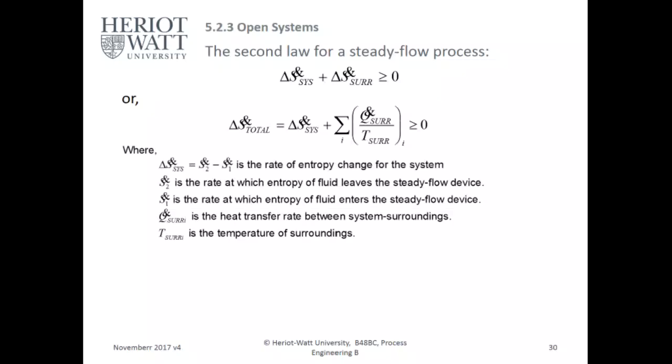Delta S of the system equals S2 minus S1, which is the rate of entropy change for the system. S2 is the rate of entropy of the fluid leaving the steady flow device, and S1 is the rate at which entropy of the fluid enters. Q of the surroundings is the heat transfer rate between the system and surroundings, and T of the surroundings is the temperature of the surroundings. This applies to pipes, heat exchangers, and similar open-system devices.